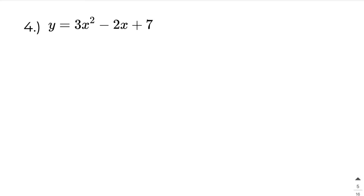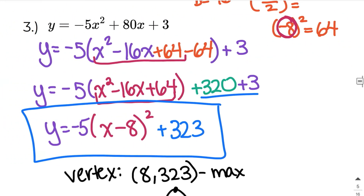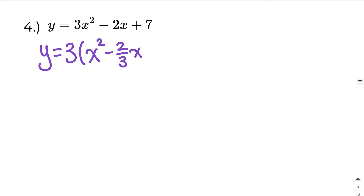In our next example, we've got lots of fractions. Pay very close attention. Here we get y equals 3x squared minus 2x plus 7. I need to factor out the 3. Even though this minus 2 is not divisible by 3, I still have to factor out that 3. When I do that, I get x squared. Now I take this negative 2, divide it by 3, and that's what I get for my x coefficient — because when we factor, we're just dividing. So we have fractions here, and that's okay. Don't let this scare you.